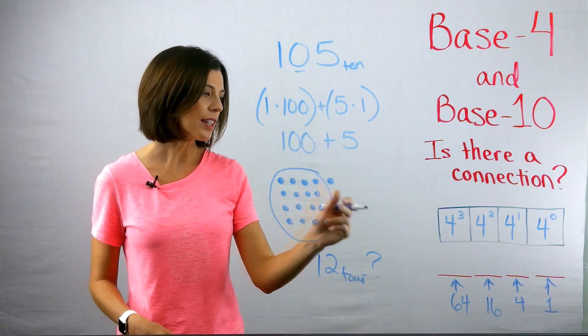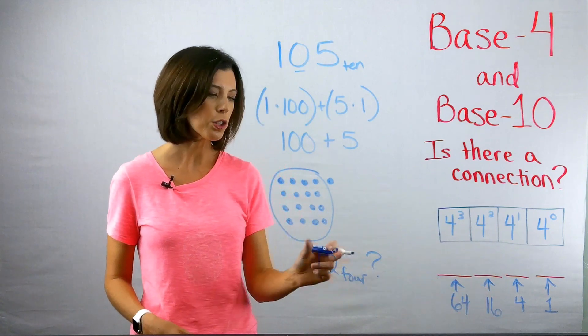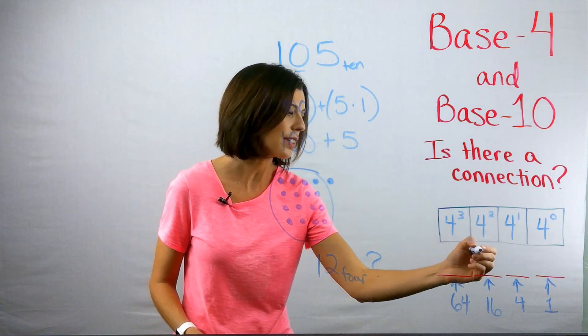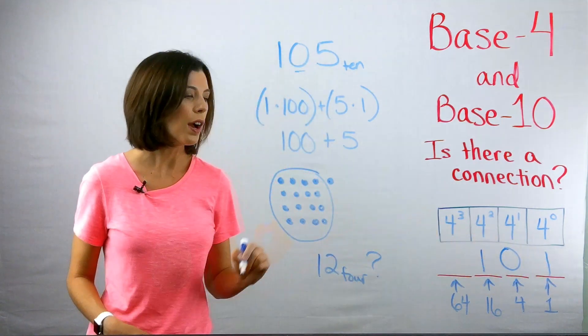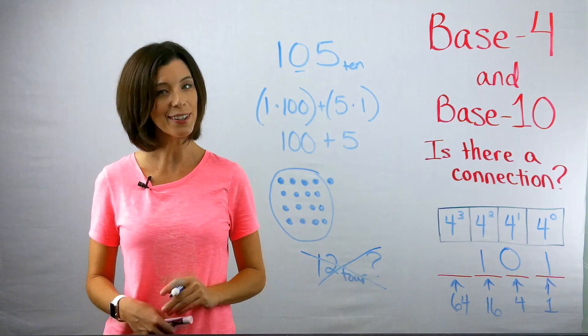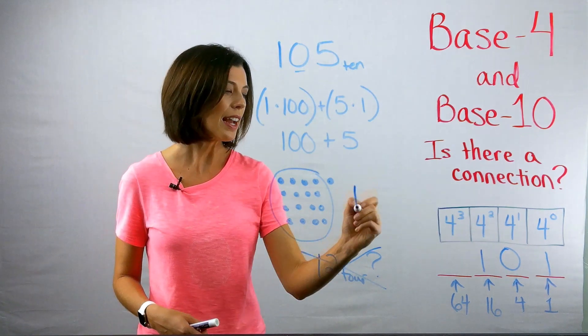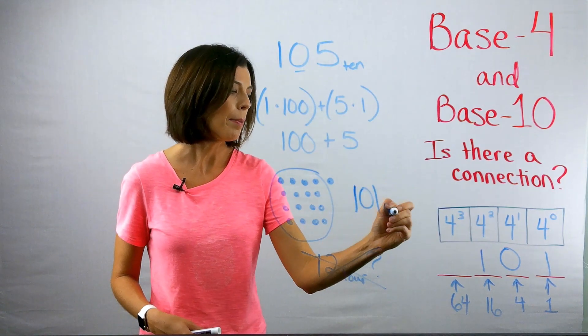So if I think about this, and again, I'm looking at my base four chart here, I see that I have one group of 16, I have zero groups of four, and I have one unit. So I know that that's not actually 12 base four, it's actually 101 base four.